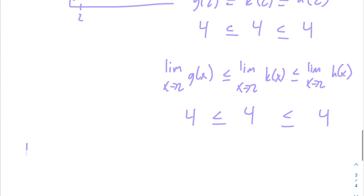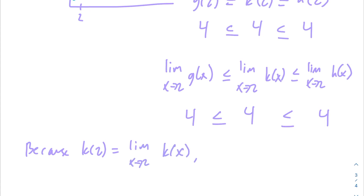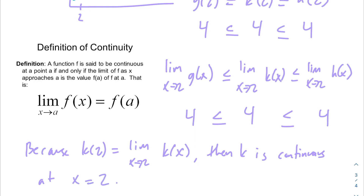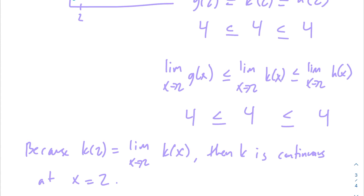Because k(2) = 4 equals the limit as x → 2 of k(x) = 4, k is continuous at x = 2 by the definition of continuity. Hopefully that helps with this AP Calculus problem. If you have any questions, feel free to leave them below and I'll get back to you.